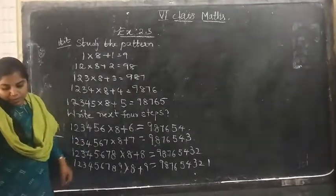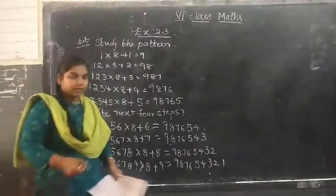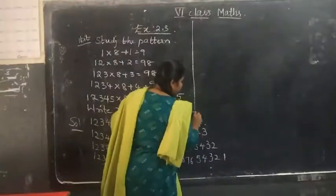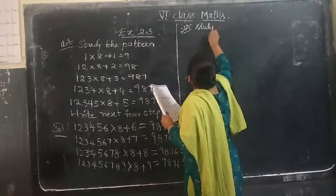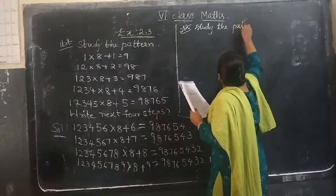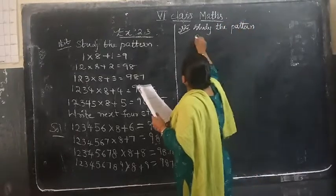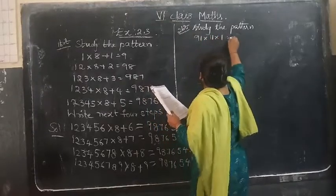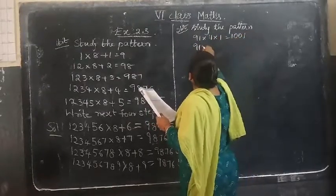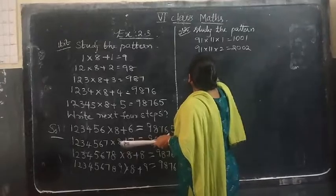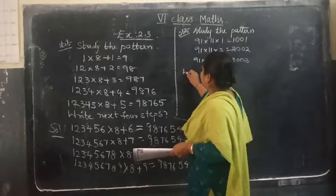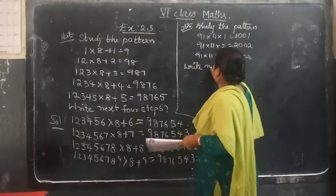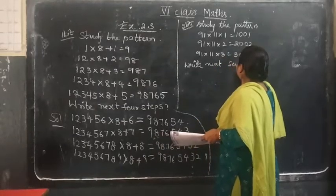Next is the second bit — study the pattern again. Another pattern has been given and you have to write seven steps for it. That is: 91 × 11 × 1 = 1001; 91 × 11 × 2 = 2002; 91 × 11 × 3 = 3003. We have to write the next seven steps here.